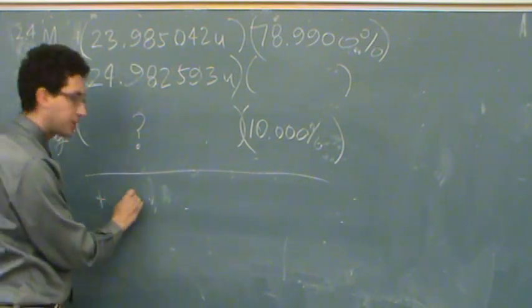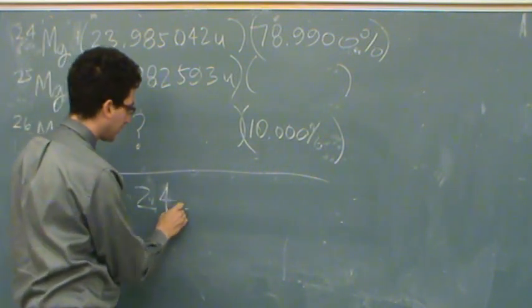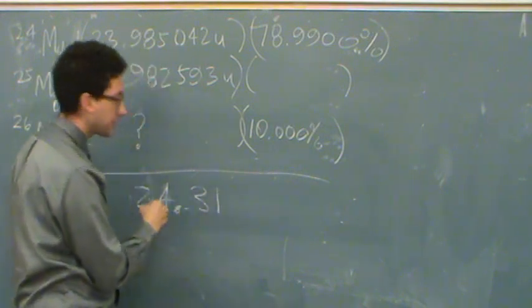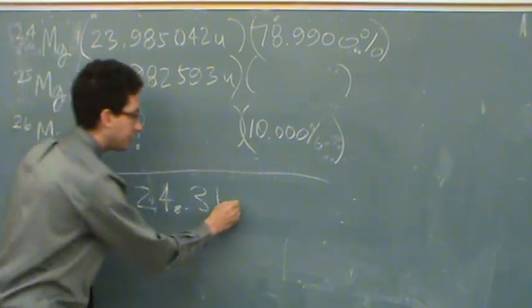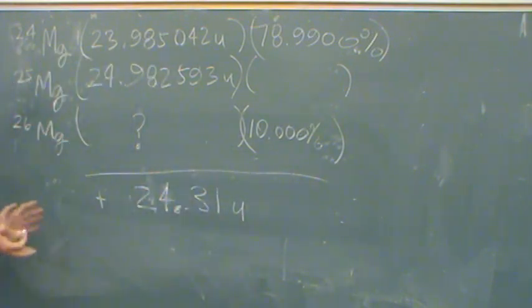I don't know if they gave it to you, but sometimes they'll give you more digits than what I'm reading on the periodic table here. You'll probably look in the back of your book and get at least one more digit in there. But it's approximately 24.31 U is going to be, if you added them up, what you'd get.